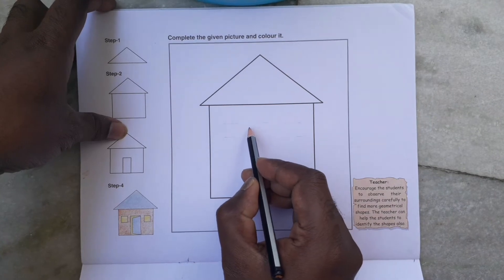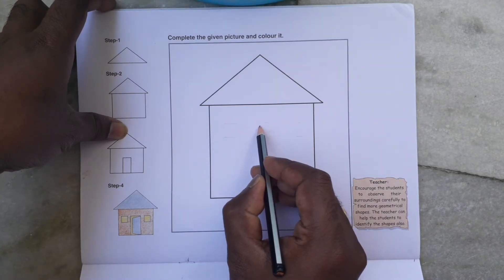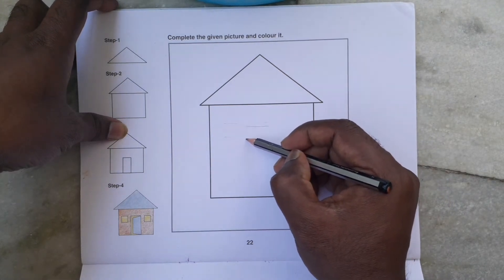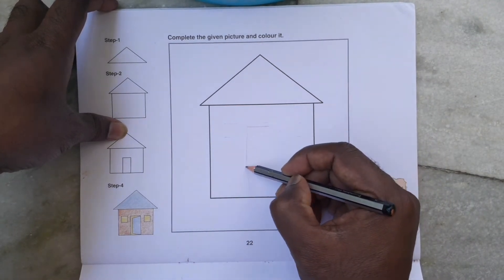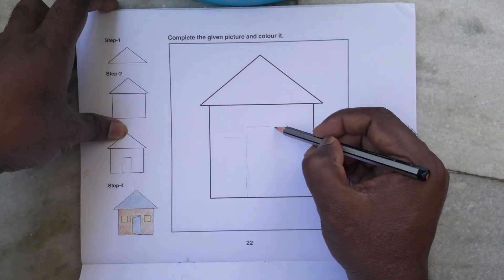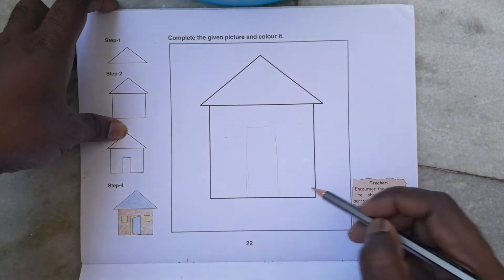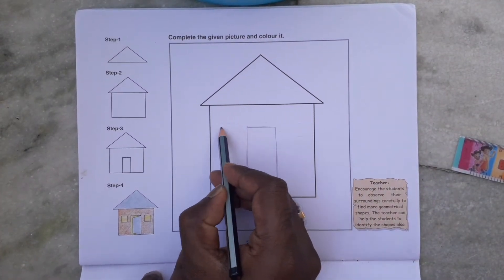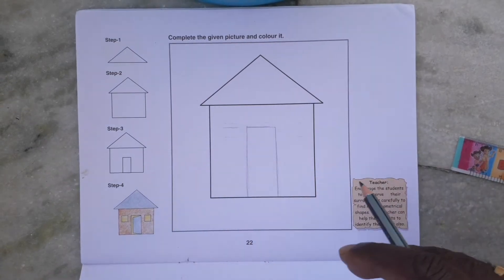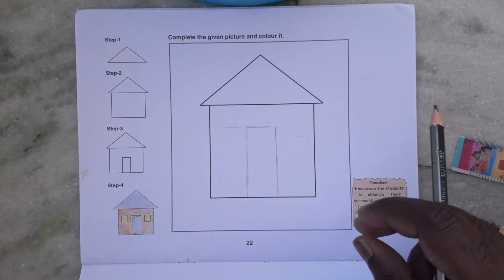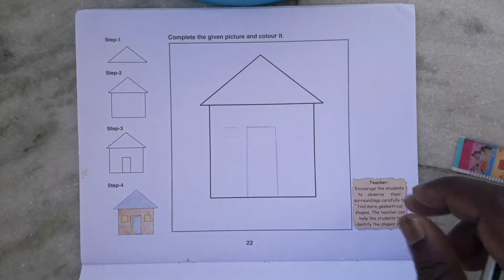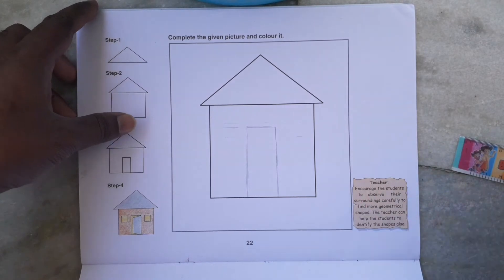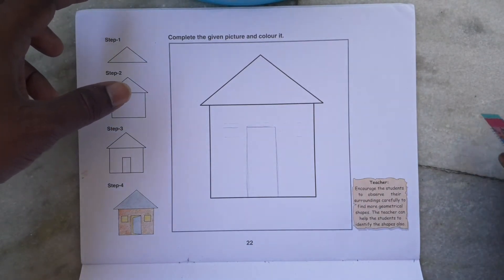Draw the door, and next the windows. Children, for this you can take alpha B scale or the geometric box tools. You can also take a simple scale.